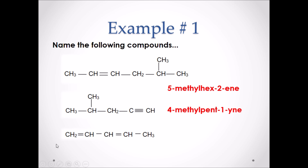In our last example, we need to find the longest carbon chain that includes both multiple bonds — one, two, three, four, five — and number that chain from the end that gives both double bonds the lowest value. We would number this from left to right: one, two, three, four, five. Our double bonds are coming off the first and third carbon in the chain. As a result, our name is pent-1,3-diene. Don't forget the di- representing there are two multiple bonds.